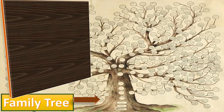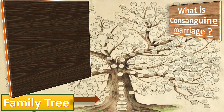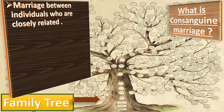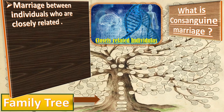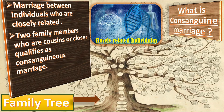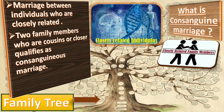What is consanguineous marriage? Consanguineous marriage is the match between individuals who are closely related. In a clinical sense, marriage between two family members who are cousins or closer qualifies as a consanguineous marriage. This is based on the gene copies their offspring may receive.